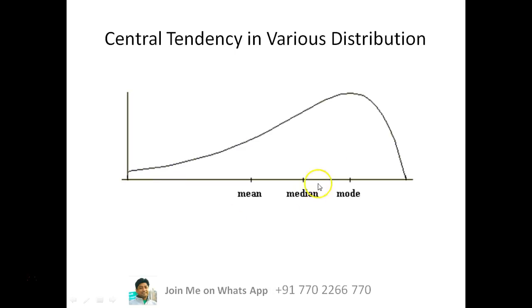In such kind of cases, because this is the most repeated frequency, this will be mode. Median is the center part, all the values, the center part is this, so this is median and mean will be here. So in such cases, mean will be lowest, median will be in the middle, and mode will be the highest.